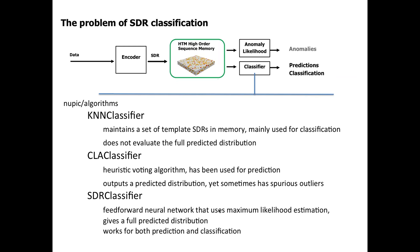On the CLA classifier, you mention a heuristic voting algorithm. Is that something that's a known term that means something, or is that just a description of some algorithm we made up?